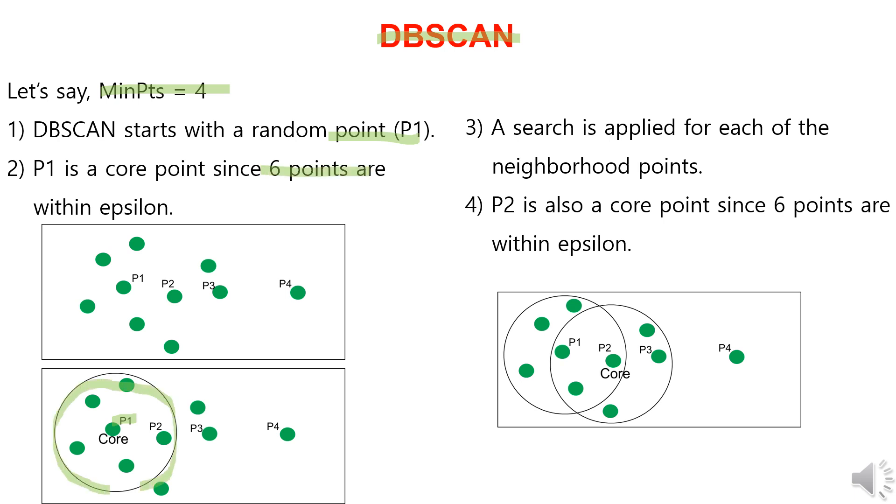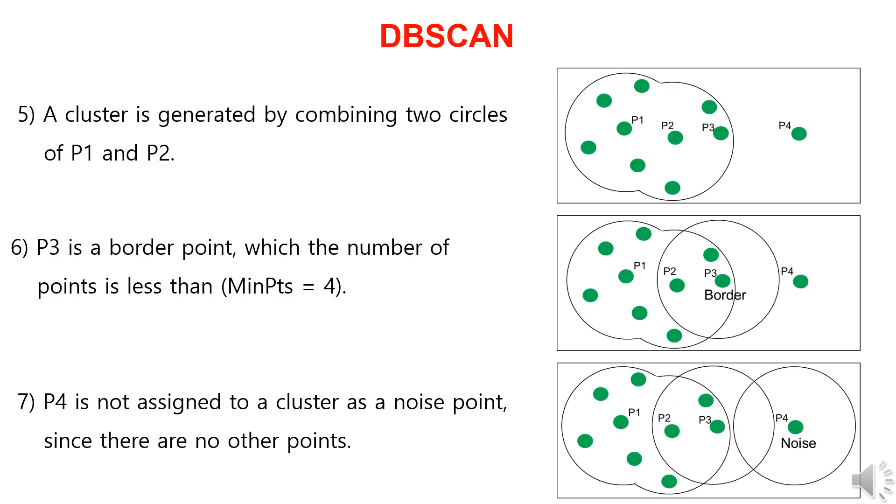Since this is greater than the minimum points, P1 becomes a core point. We then create circles with an epsilon radius for all the points within this circle and search within those circles. In the case of P2, there are also six data points within its epsilon radius, making it a core point. Both P1 and P2 are core points, so by connecting them, they form one cluster. We then extend the cluster region in this manner.